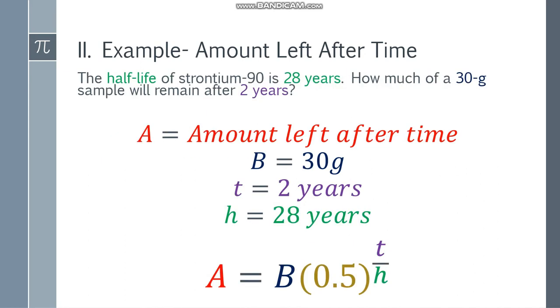Ngayon, gaming formula. Substitute my values. A is equal to 30 multiply by 0.5 to the 2 over 28. So again, yung T yung sa taas, yung sa numerator, at H yung sa denominator.